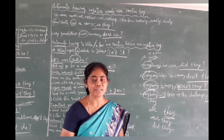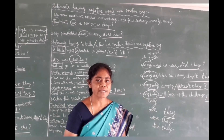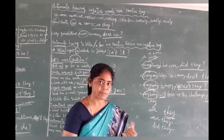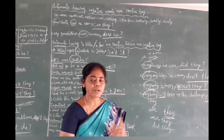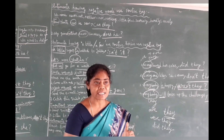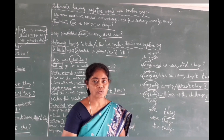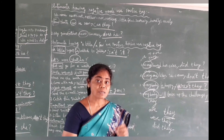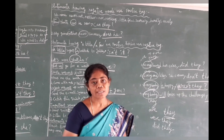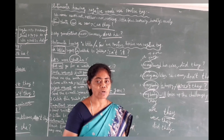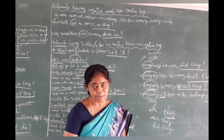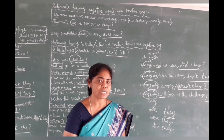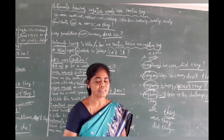So children, so far we have seen question tags. A positive tag takes negative, and a negative tag takes positive. We have seen some negative words, and also that words like 'anybody' and 'everybody' take plural form. Remember the rules: subject singular plus present tense uses 'does'; subject plural plus present tense uses 'do'; subject with past tense uses 'did'. Apply these rules wherever needed. Just go through and find out how to apply. Thank you, children.